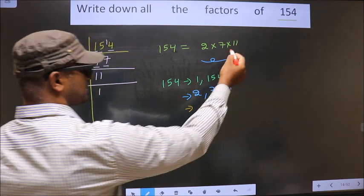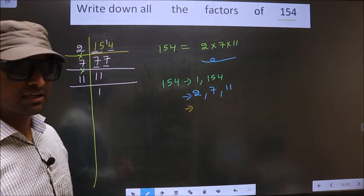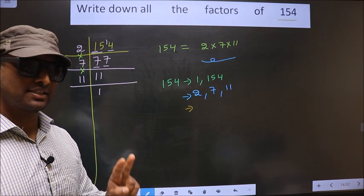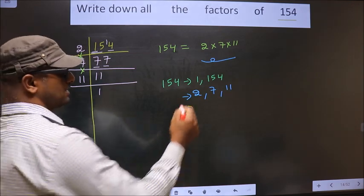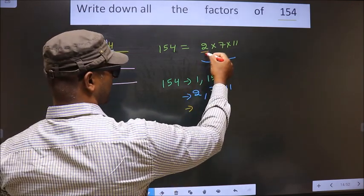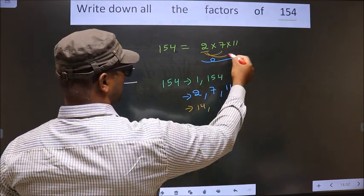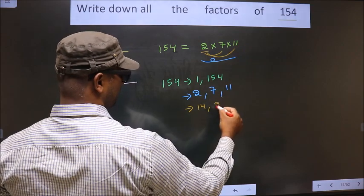Next. Now, from these numbers, you take a combination of 2 numbers. How do we do that? See. First, I fix 2. I combine with 7. 2 into 7, 14. Now, I combine with 11. 2 into 11, 22.